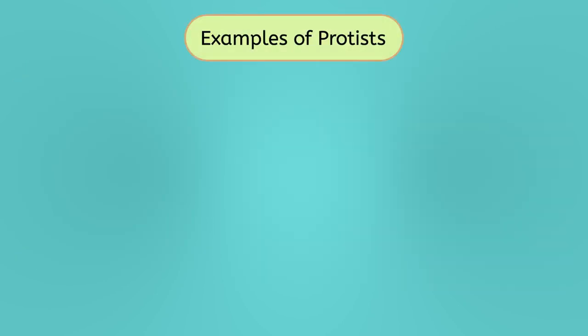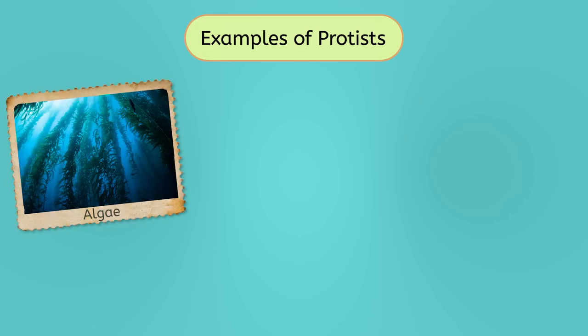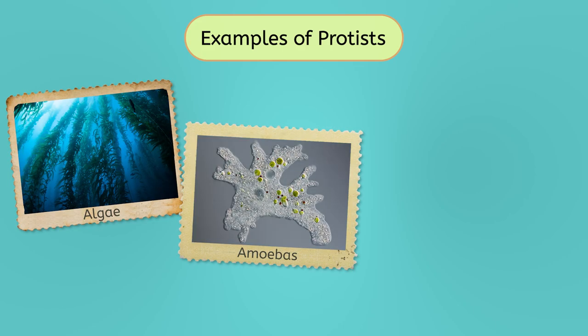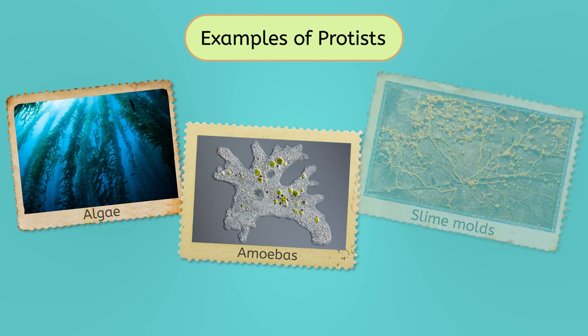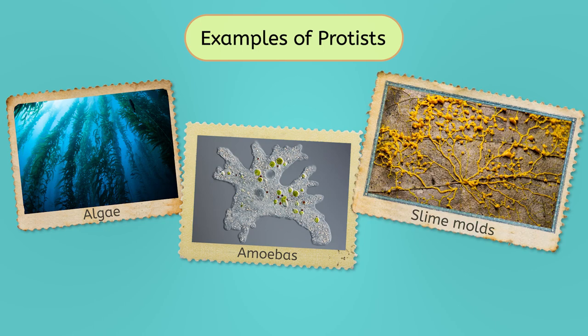Some examples of protists include algae, which behave a lot like plants; amoebas, which are very similar to animals; and slime molds, which are easily mistaken for fungi.